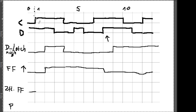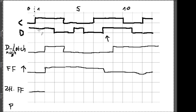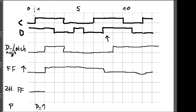Wir haben am Übergang von 0 zu 1, also am Anfang des ersten Taktes, eine Vorderflanke. Das ist natürlich verzögert – erst am Anfang des zweiten Taktes ändert sich etwas für uns. An der Stelle gilt P gleich D. Was ist im ersten Takt der Wert von D? D ist 1, also bekommt P den Wert 1 zugewiesen. Mehr passiert bei der Rising Edge zunächst nicht – einfach nur P kriegt den Wert von D.